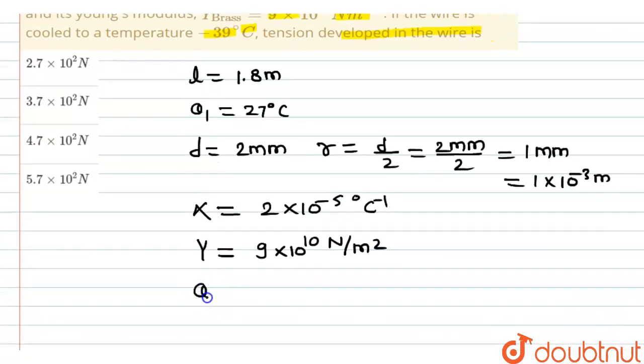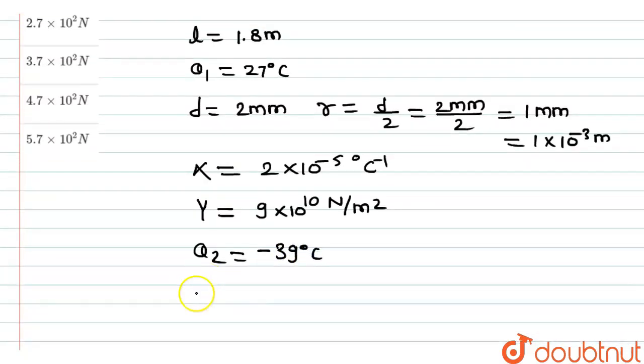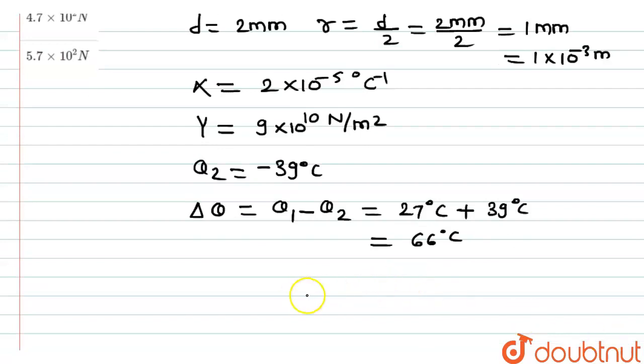The final temperature theta 2 is minus 39 degree centigrade. So the change in temperature del theta equals theta 1 minus theta 2, which equals 27 degree centigrade minus minus 39 degree centigrade, which equals 66 degree centigrade. This will be the total change in temperature.